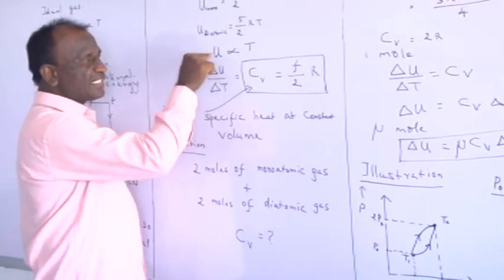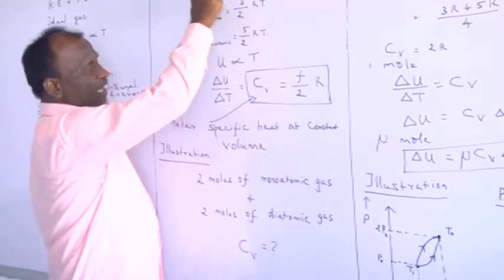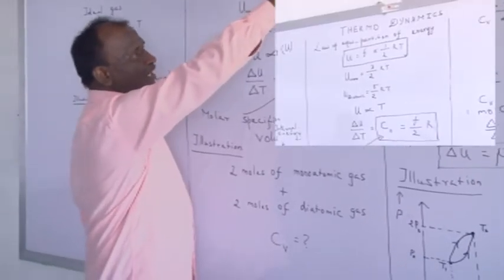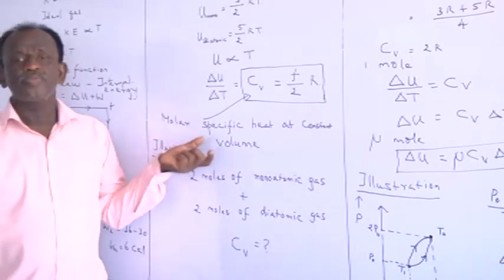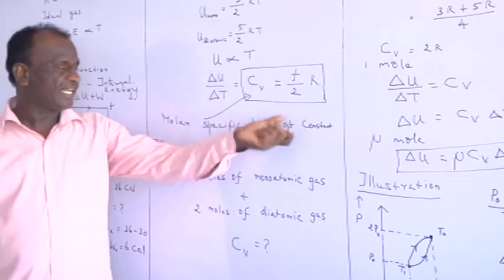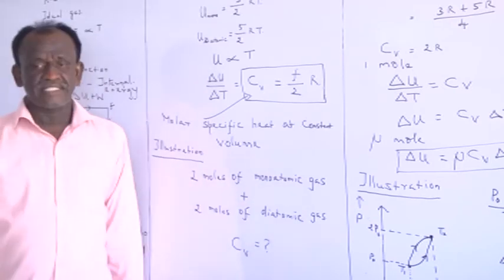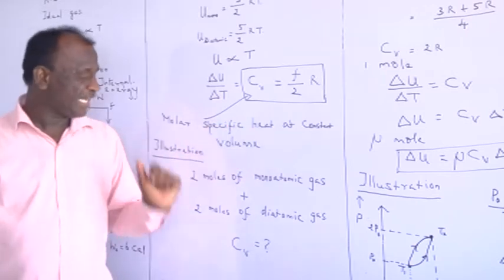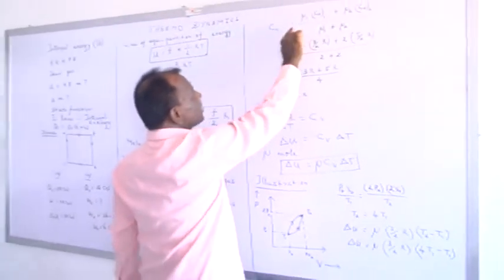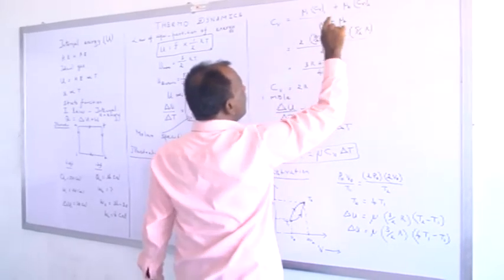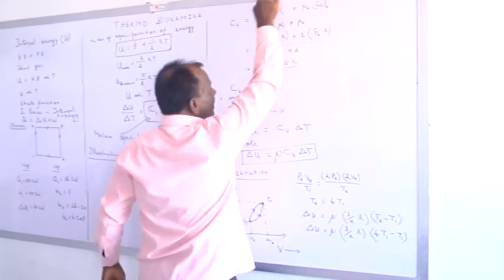Differentiating internal energy with respect to temperature gives a new quantity called the molar specific heat capacity at constant volume Cv. From U = (F/2)RT, differentiation gives Cv = F/2 · R. As an illustration, for a mixture of 2 moles of monoatomic gas and 2 moles of diatomic gas, the molar specific heat at constant volume is found using the weighted average: Cv = (μ₁Cv₁ + μ₂Cv₂)/(μ₁ + μ₂). The specific heat of monoatomic gas is (3/2)R and of diatomic gas is (5/2)R. With both being 2 moles, the result is Cv = 2R.